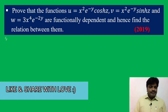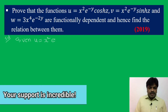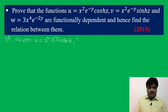First of all, write the given data. Given: u = x² e^(−y) cosh(z), v = x² e^(−y) sinh(z), and w = 3x⁴ e^(−2y).